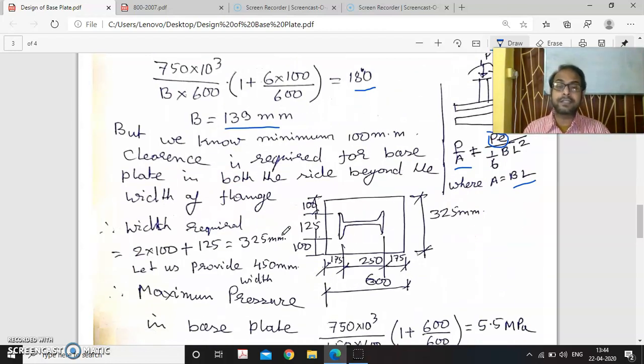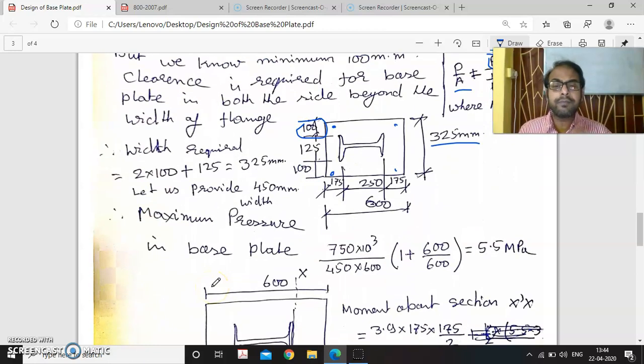But this 139 may not be sufficient because we have to provide minimum 100 millimeter projection beyond this, as we have to provide some anchor bolts here in the four sides of the base plate. So we have calculated the minimum requirement of the width, which is coming as 125 plus 100 on two sides equals 325. But we have rounded up: if one side of the length is 600, the other side should be minimum 400 or 450. We have considered 450 millimeter width. Now we have calculated the maximum pressure considering the area: 750 × 10³ divided by 450 × 600, and this is coming as 5.5 MPa, the highest pressure.